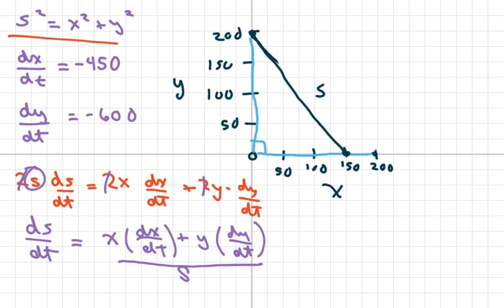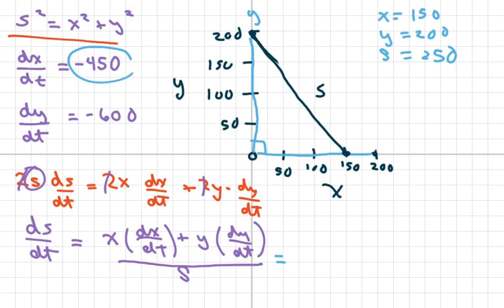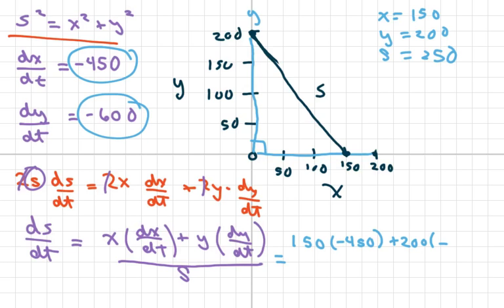We have X is 150, Y is 200, and S is 250. So I'm going to plug everything in. We get 150 times negative 450 plus 200 times negative 600, all over 250. And this is going to give you negative 750 miles per hour.